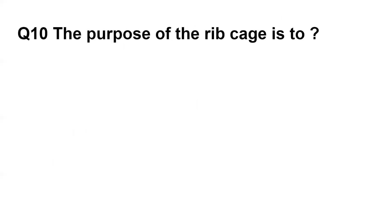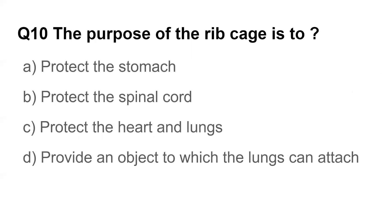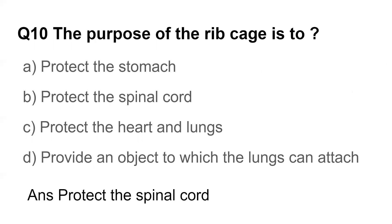Question number ten: The purpose of the rib cage is to — protect the stomach, protect the spinal cord, protect the heart and lungs, or provide an object to which the lungs can attach. The answer is to protect the spinal cord.